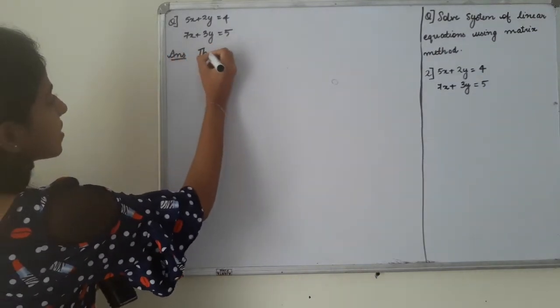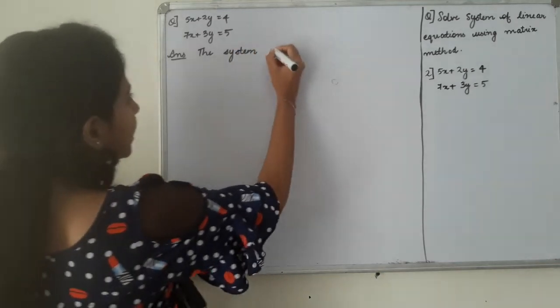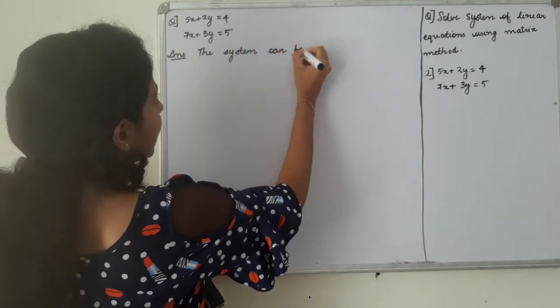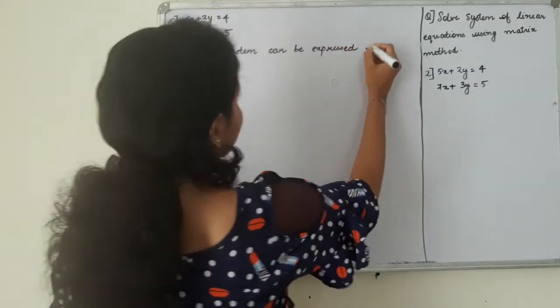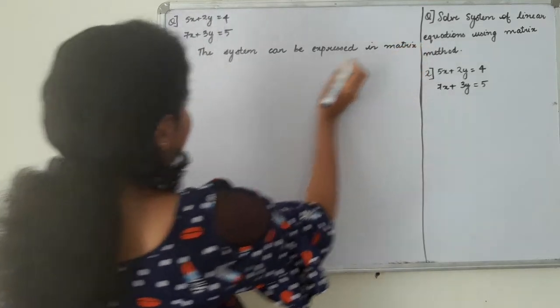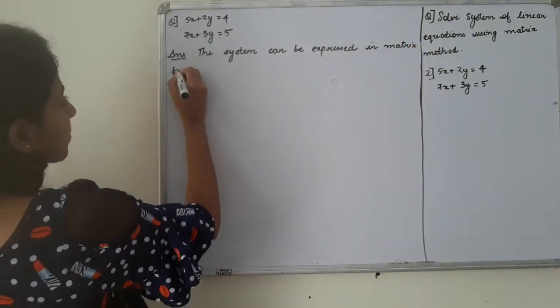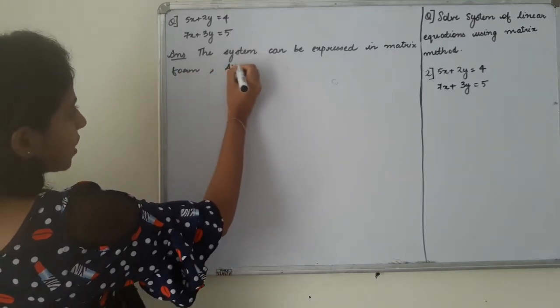The system can be expressed in matrix form. We have a matrix formula expressed here. Now, we have AX is equal to B.